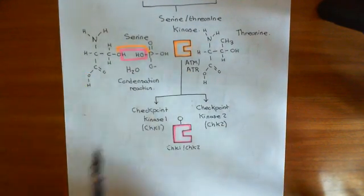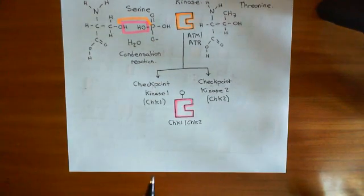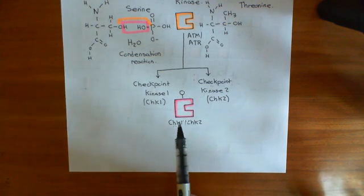One of their targets, well in fact two of their targets, are these checkpoint kinase enzymes, so checkpoint kinase 1 and checkpoint kinase 2. And when they add a phosphate group onto the checkpoint kinase 1 slash checkpoint kinase 2 enzyme, it causes that enzyme to become activated. And this enzyme is now an active serine-threonine kinase itself.